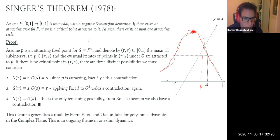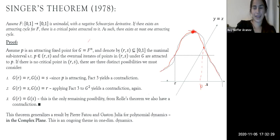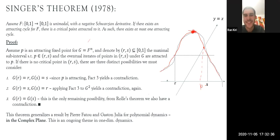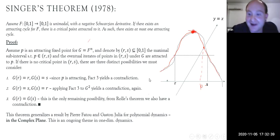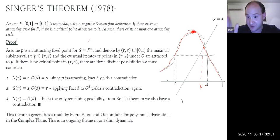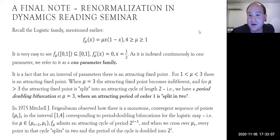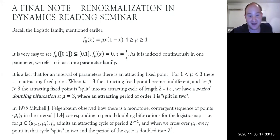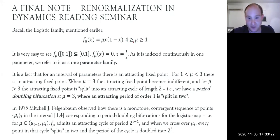The talk concludes with a round of applause. A reading seminar on one-dimensional dynamics is being organized this semester for those interested. The logistic family — a family of quadratic polynomials indexed continuously with respect to a parameter between one and four — is introduced. For a certain interval of parameters there is an attracting fixed point, precisely the open sub-interval between one and three.